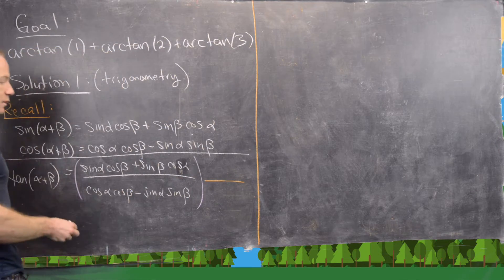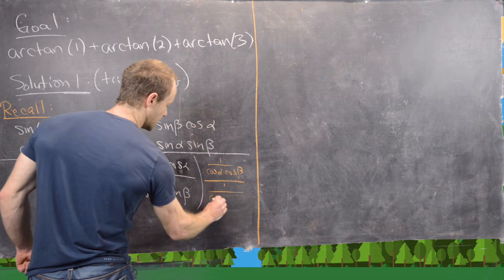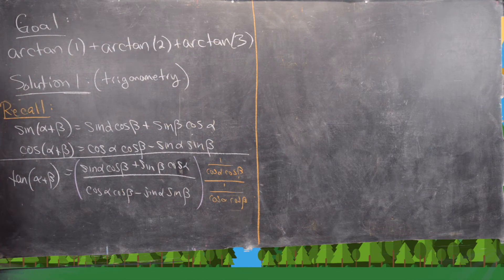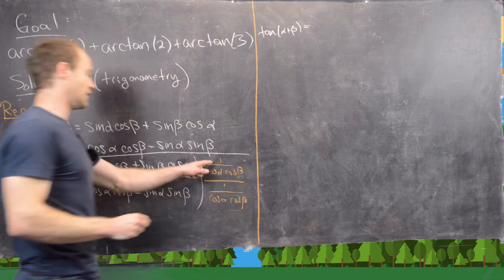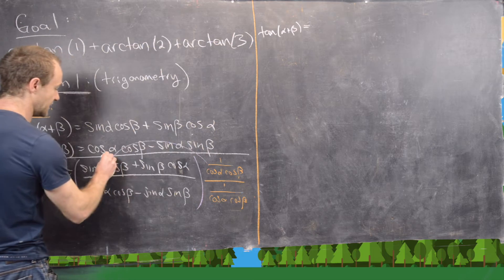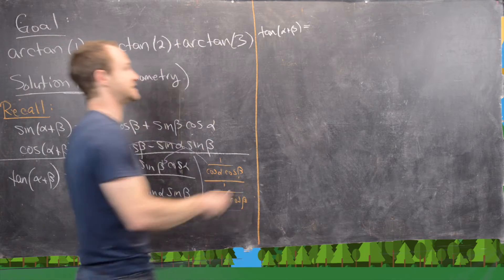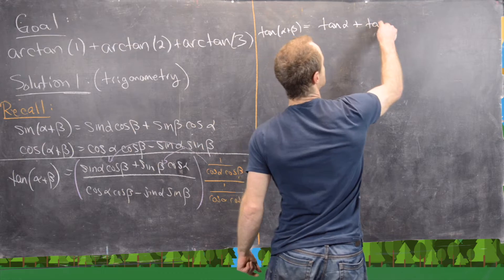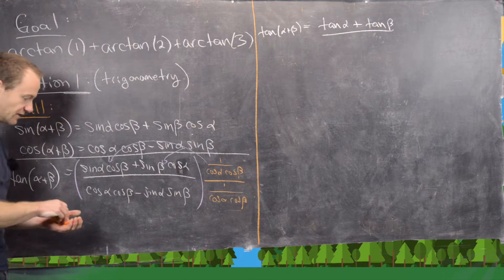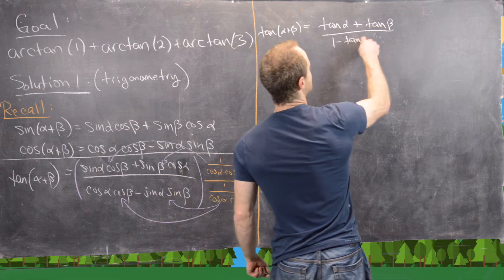We can do that by multiplying by 1 over cosine alpha cosine beta divided by 1 over cosine alpha cosine beta. When we distribute, the cosine beta cancels and we get sine over cosine of alpha, which is tangent of alpha. Something similar happens with the second term, giving us tangent of beta. Down in the denominator, the terms simplify to 1 minus tangent alpha times tangent beta.